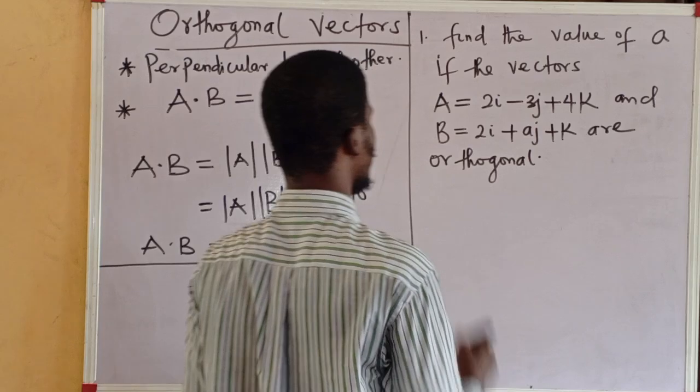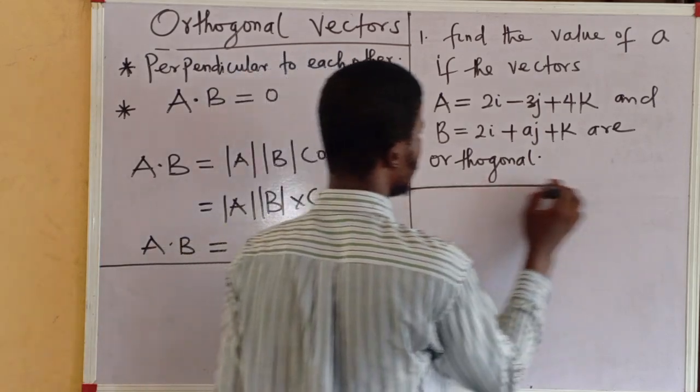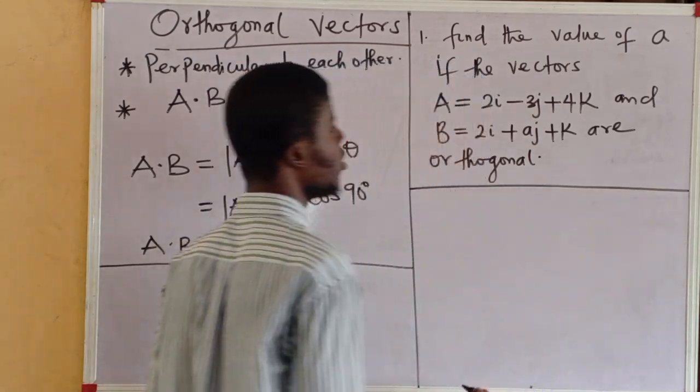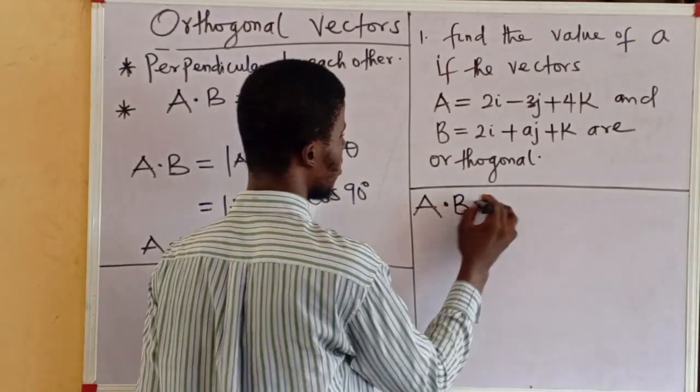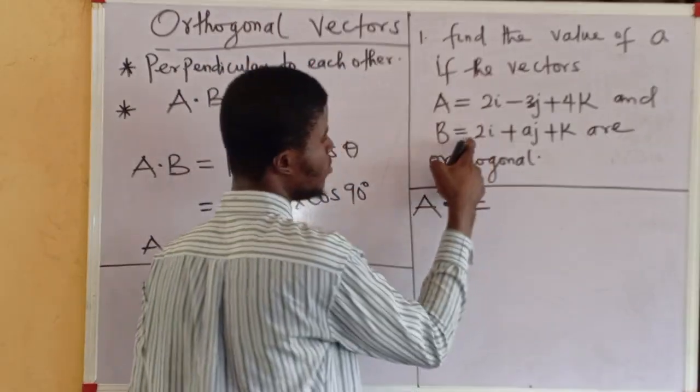So, the principle remains the same. For orthogonality of two vectors, their dot product equals zero. So, what is the dot product of A and B?